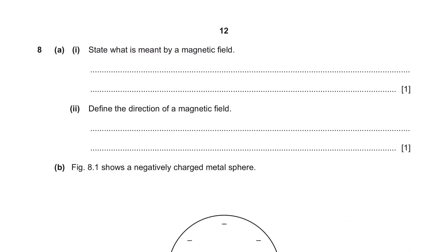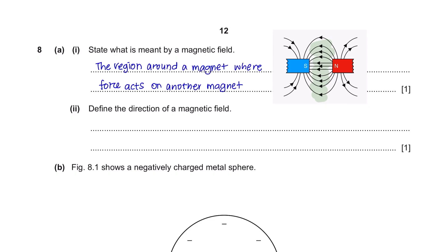Question 8A, Part 1: State what is meant by a magnetic field. A magnetic field can be defined as the region around the magnet where a force acts on another magnet. Part 2: Define the direction of a magnetic field. The direction of a magnetic field is the direction of the force of the north pole of a magnet at that point.